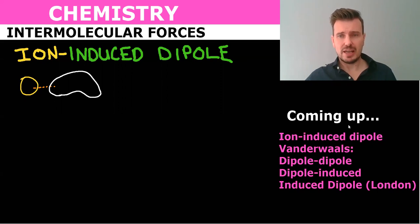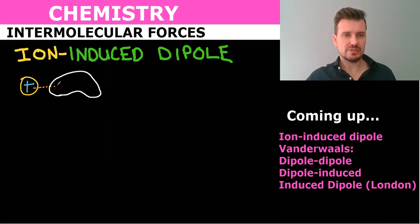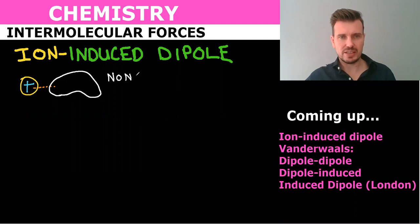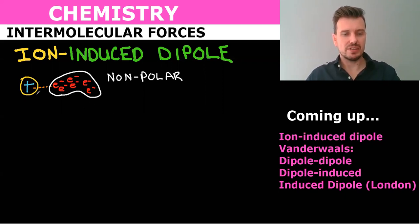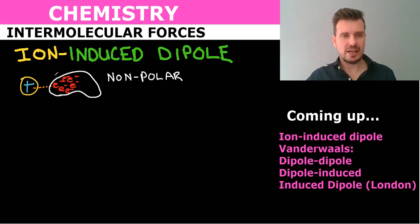We've got an ion in yellow and let's say that ion had a positive charge. Now if this was a polar molecule this would be the negative end and so there would be this dipole ion-dipole force. But this is a non-polar molecule so it doesn't have that automatic spot where the ions can be attracted. What happens here is we know that this non-polar molecule has electrons, and these electrons are constantly moving. What's going to happen is this positive ion is going to attract the electrons, so they're going to move towards this side, and we're going to end up with a negative and a positive dipole.